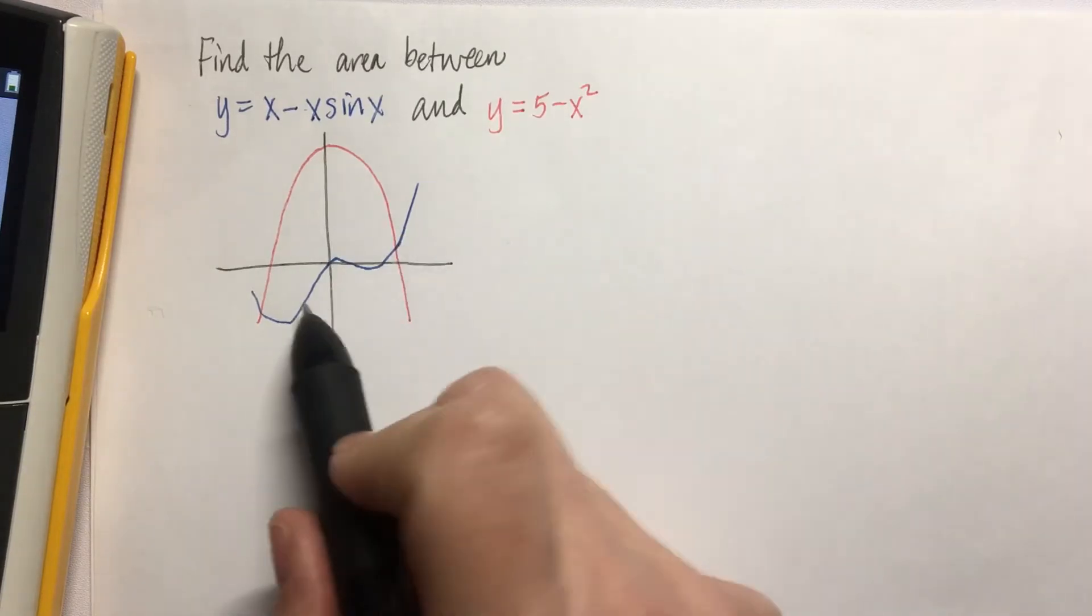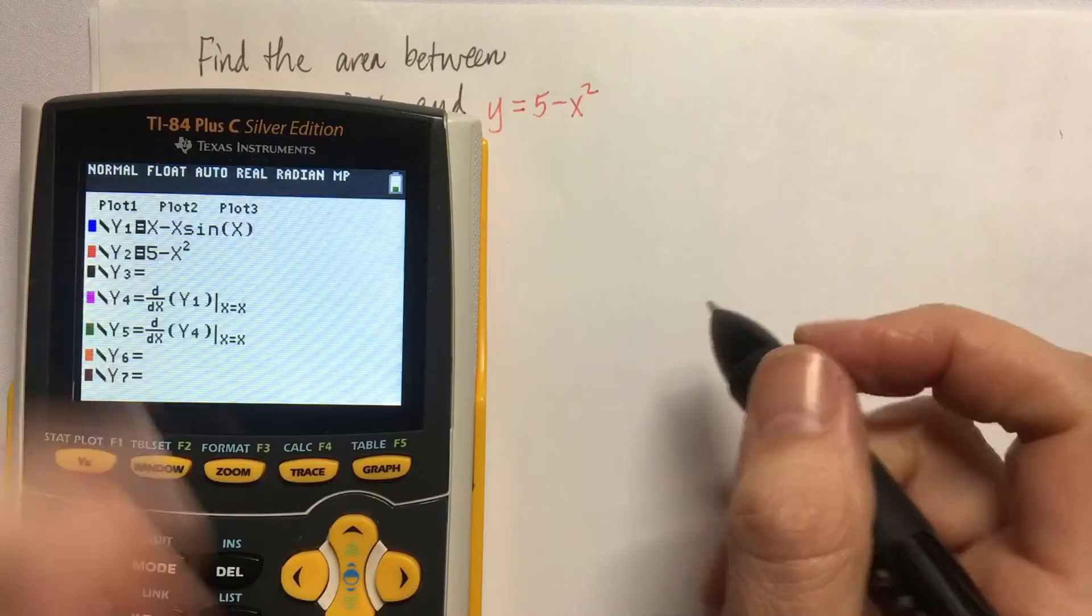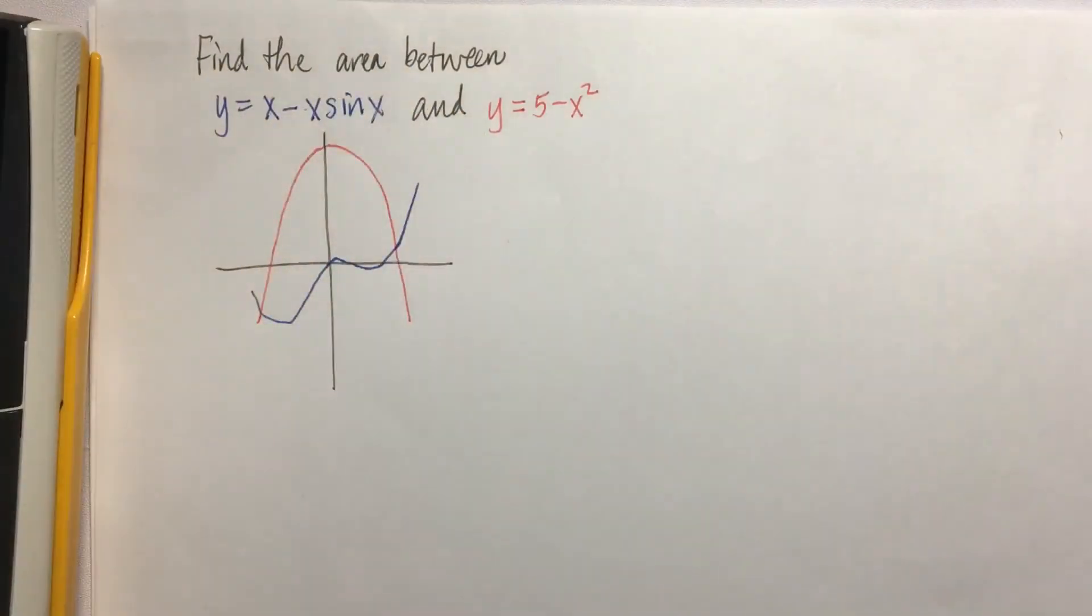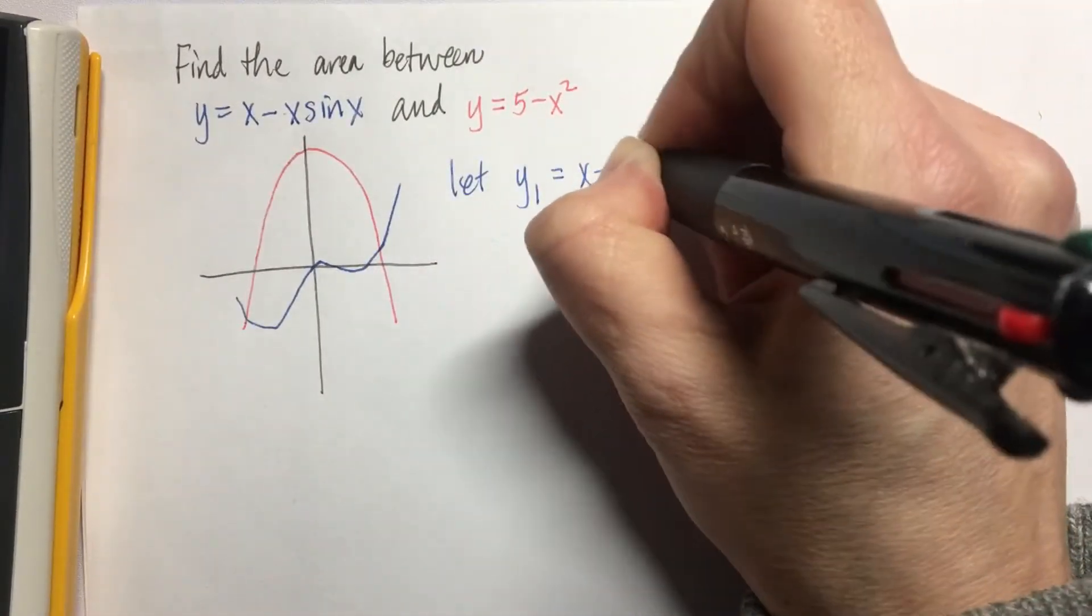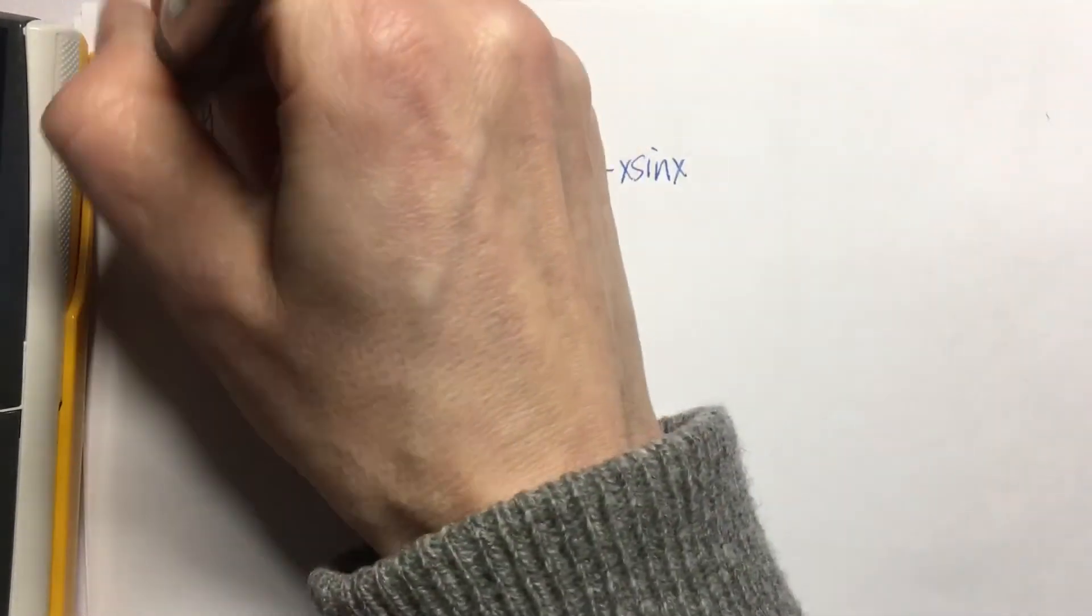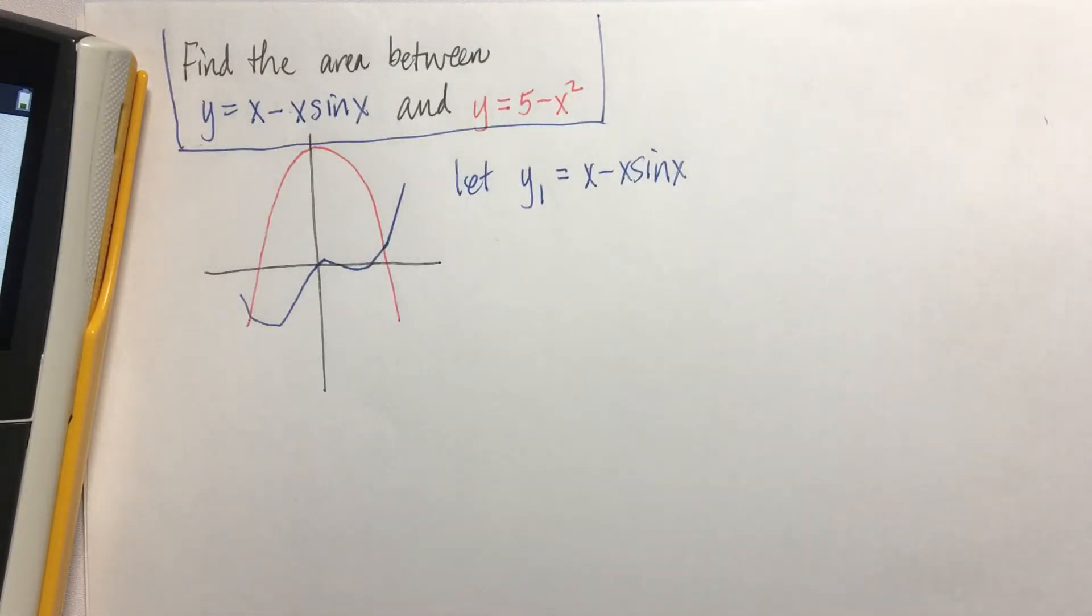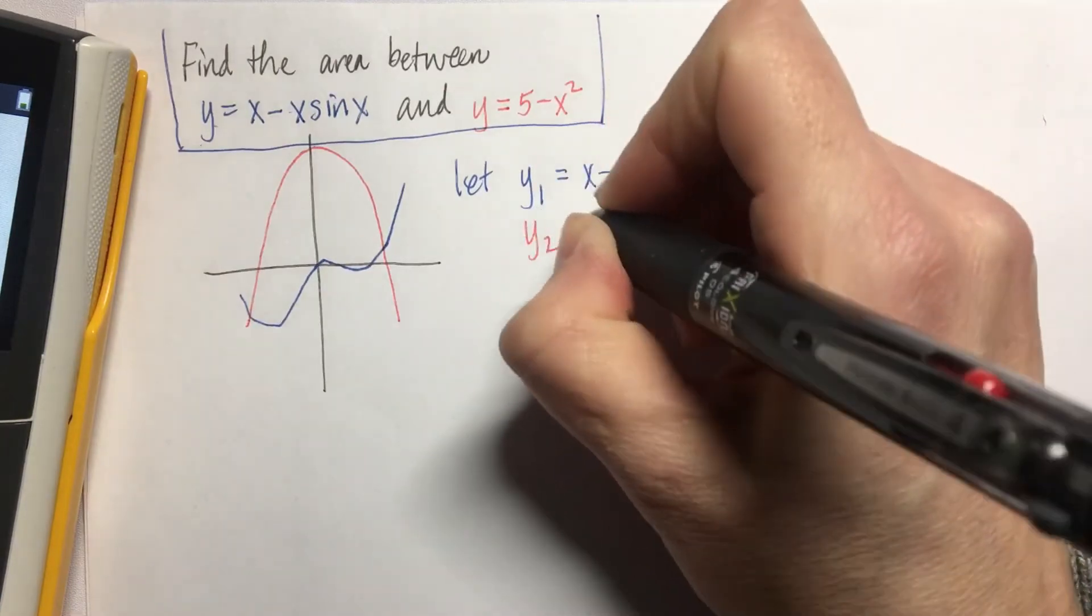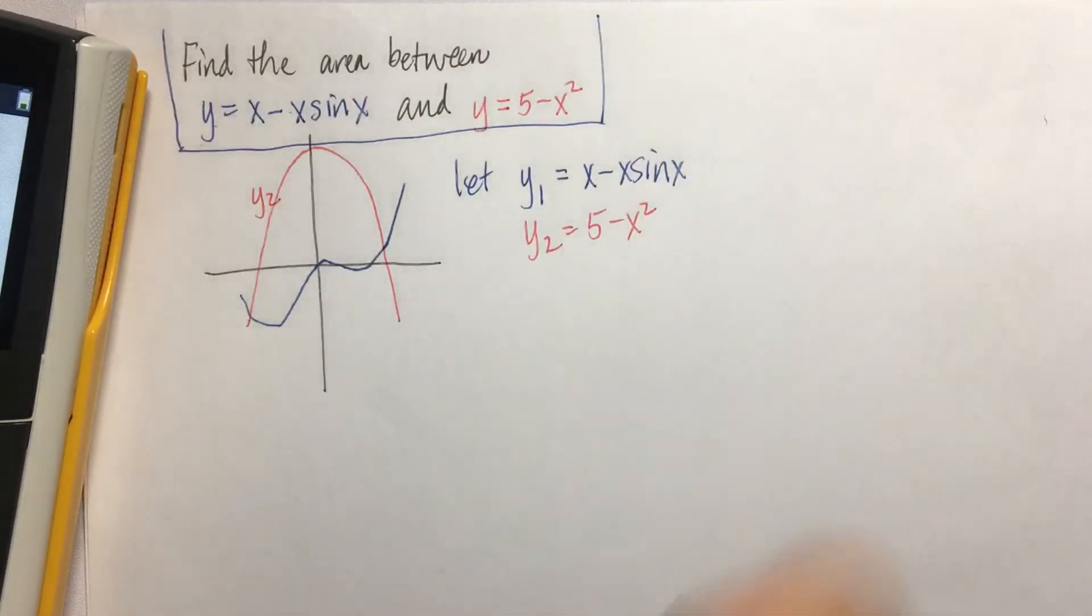The things I need to keep track of are those intersection points and which one's on top. The first thing I'm going to write down is let y1 equal x minus x sine x. If you're doing this online, which you will be, you would need to write this down because it's not going to show up in the question prompt. And then I'm going to let y2 equal 5 minus x squared. On my drawing I can even remind myself that that's y2 and this is y1.